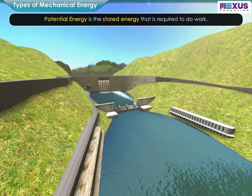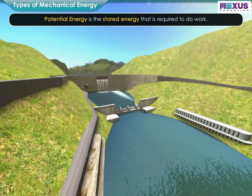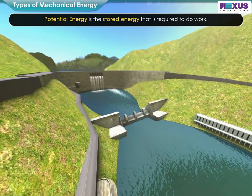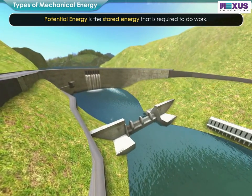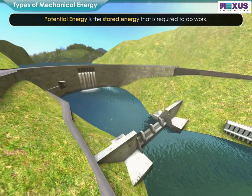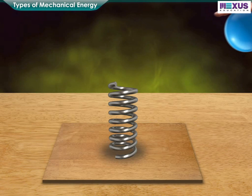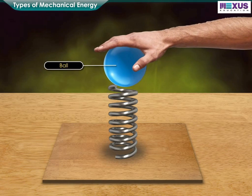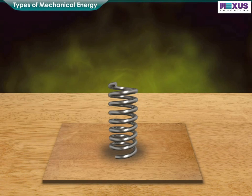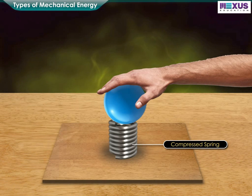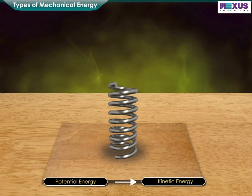Potential energy is the stored energy that is required to do work. It is the energy that is inactive for the moment, but has the potential for doing work. Fix the lower end of a coil on a table and place a small ball on it. When the ball is pressed, it bounces away. This is because when the compressed spring is released, potential energy converts to kinetic energy in the ball.